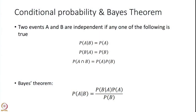Two events A and B are independent if any one of the following conditions is met: the probability of A given B equals the probability of A; the probability of B given A equals the probability of B; or the probability of A intersection B equals the probability of A multiplied by the probability of B. If any of these three conditions is met, then events A and B are called independent events.